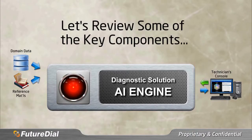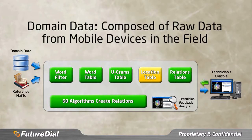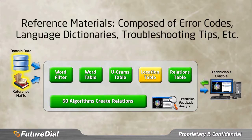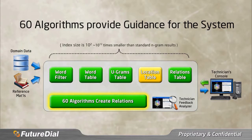Let's peek under the hood to review some of the key components within the AI engine and to see how they function. The system gets its start from compiling the raw data from mobile devices in the field, which is stored in the domain data. Additionally, there are other reference materials which are added to the mix. These include data such as error code definitions, language dictionaries, troubleshooting tips and solutions for known issues, and other information. All of this forms the foundation for the AI engine to formulate its knowledge base. The AI engine runs on 60 algorithms which provide guidance for the system and direct the system on what to learn and what to focus on.